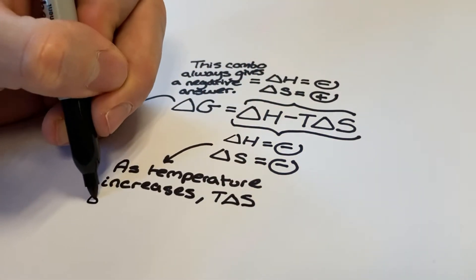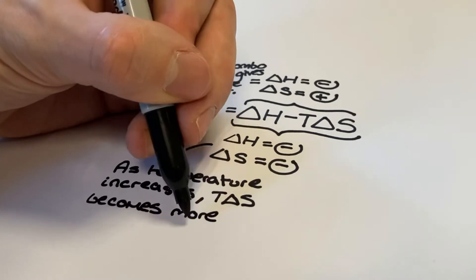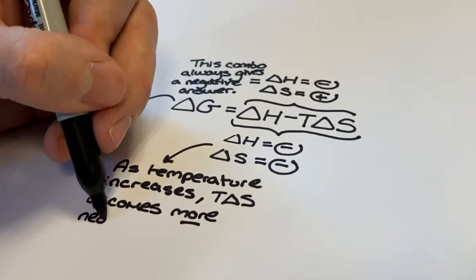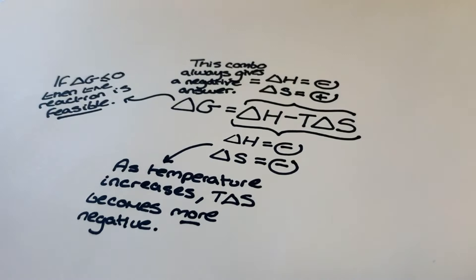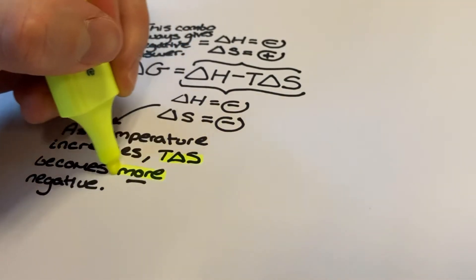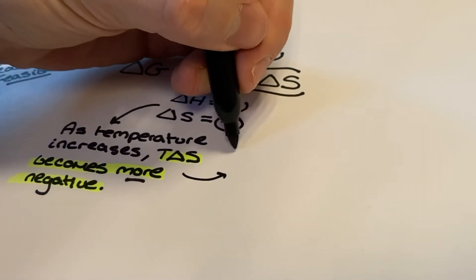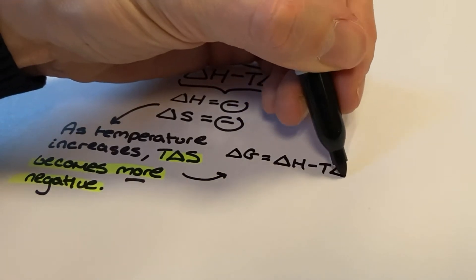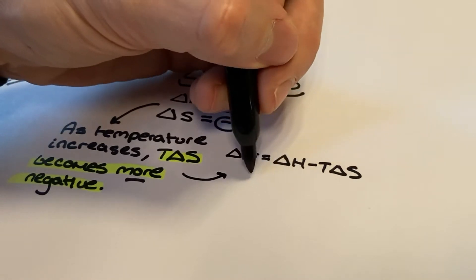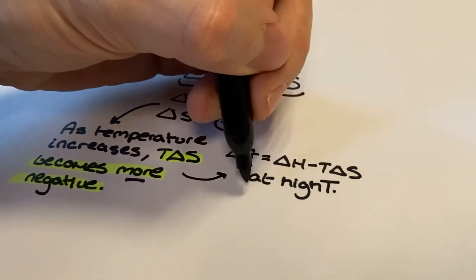For this combination of delta H and delta S, as the temperature increases we notice that the T delta S term becomes more negative. Furthermore, at higher temperatures we can see T delta S become more negative than our exothermic delta H value for the enthalpy change. The role of temperature here seems to be more important, so a closer look at the calculation is necessary. If we set delta G equal to zero and rearrange the free energy equation with temperature as the subject, we can see that temperature equals delta H over delta S.